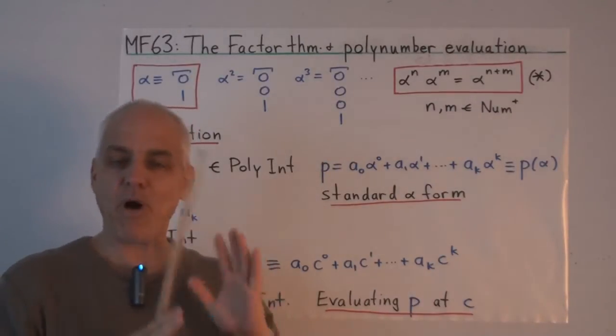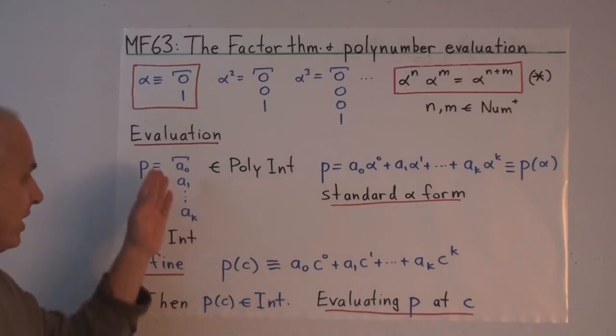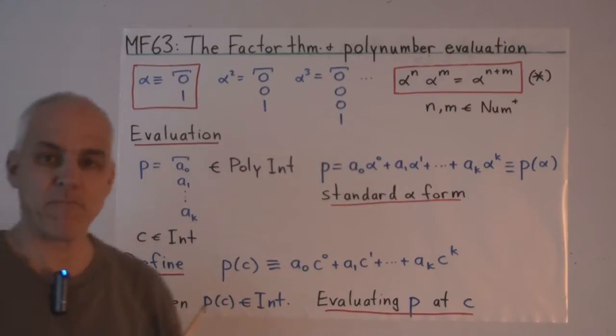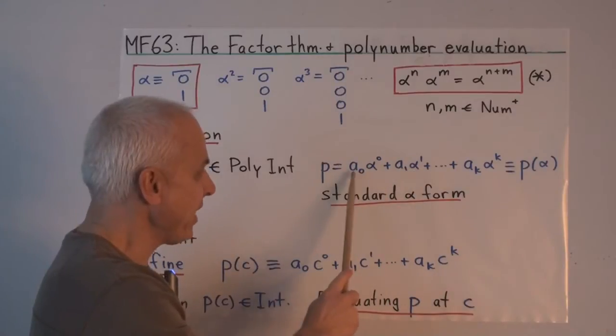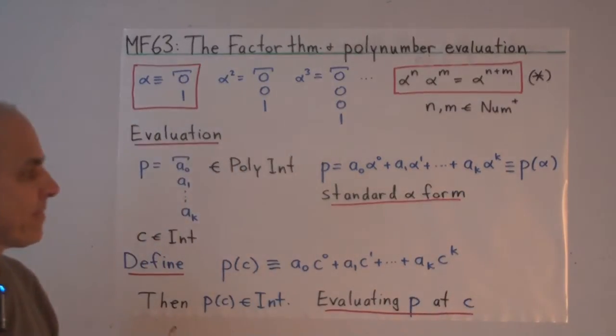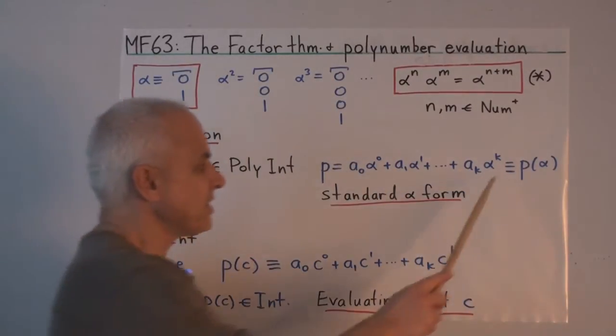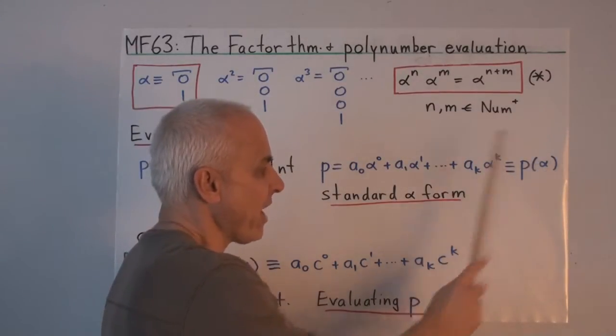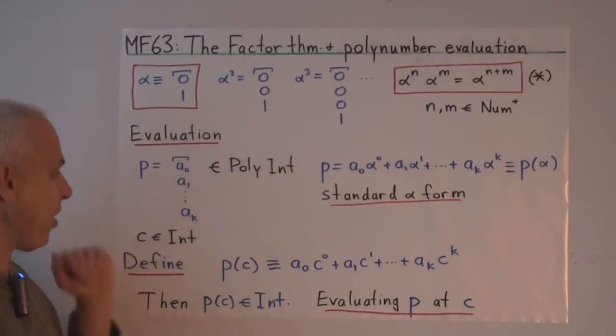Alright, so now we're going to introduce a connection between poly numbers and ordinary integers. So here is a poly number P with coefficients a0, a1, up to ak. These are all integers because we're working in the framework today of integral poly numbers. Here is the standard alpha form for that same poly number, where we write it in terms of the powers of alpha. a0 times alpha to the 0 plus a1 alpha to the 1 plus all the way up to ak times alpha to the k. And we're going to introduce a new terminology for this expression, just a new way of writing it, nothing else. We're going to say this is P bracket alpha bracket. And we're going to say P of alpha. It just means that we're talking about the standard alpha form of the poly number P.